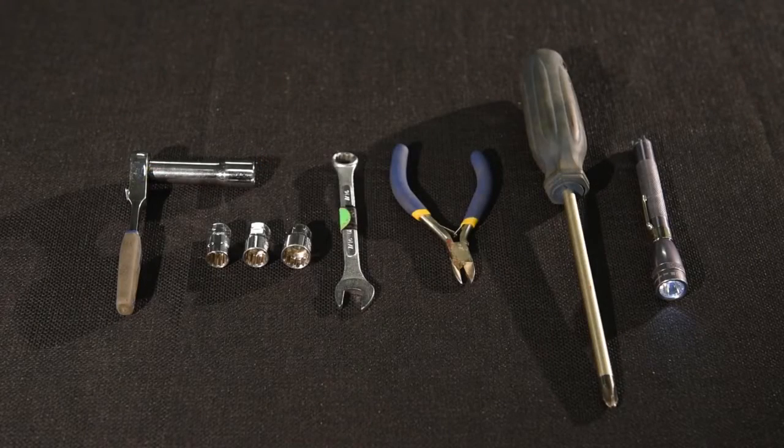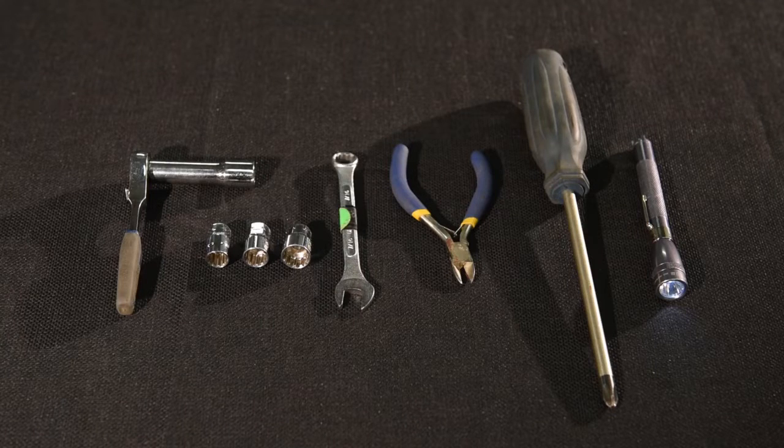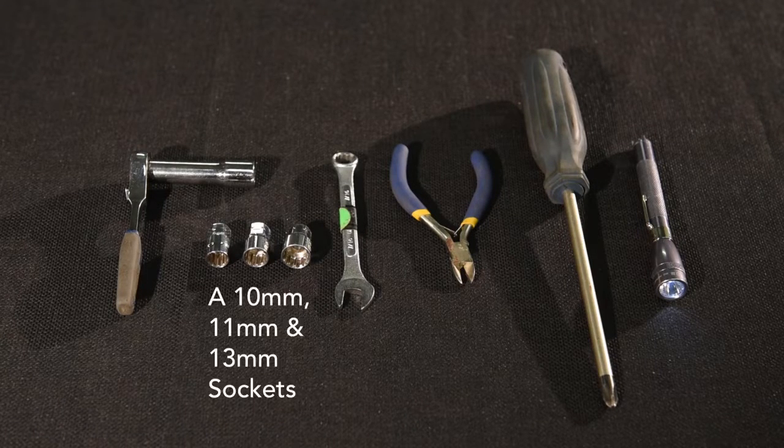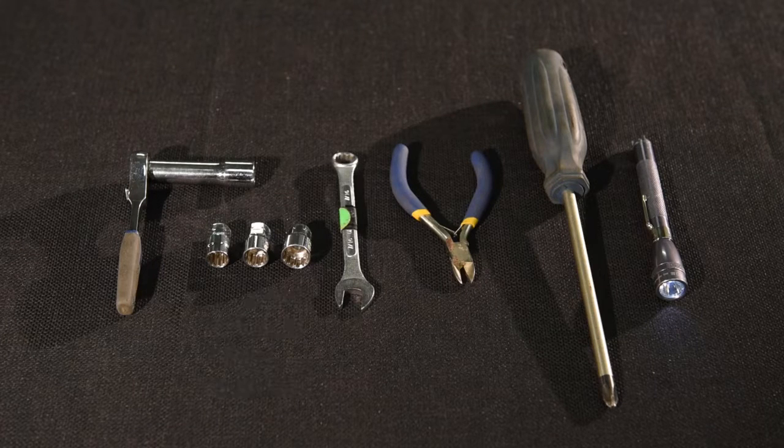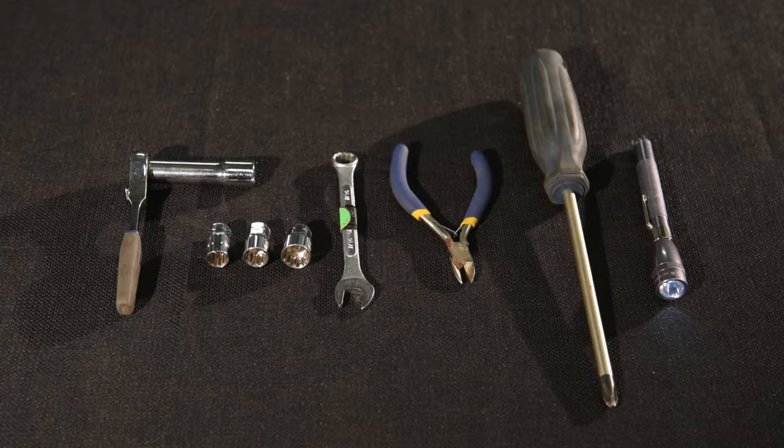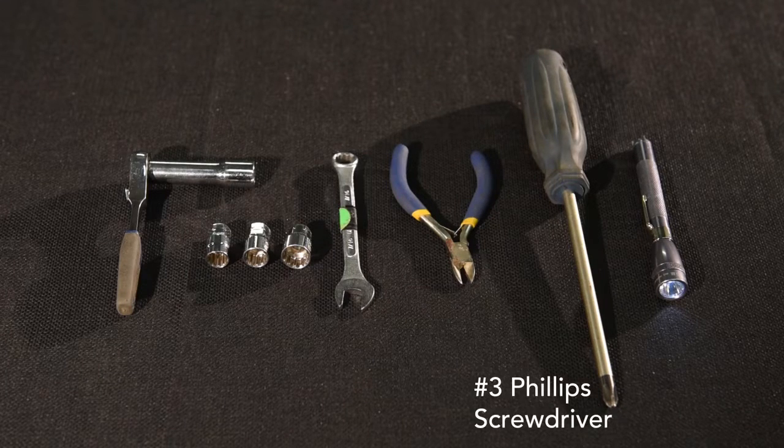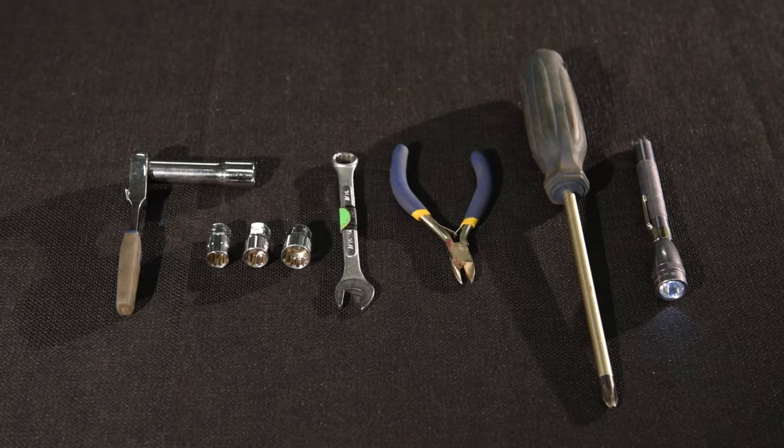The tools required for a TIC 1.0 install are: a socket driver with extension, 10mm, 11mm, and 13mm sockets, an 11mm wrench, wire cutters, and a Phillips number 3 screwdriver. Optionally, if you're working with a body on the vehicle, you may need a light as well.